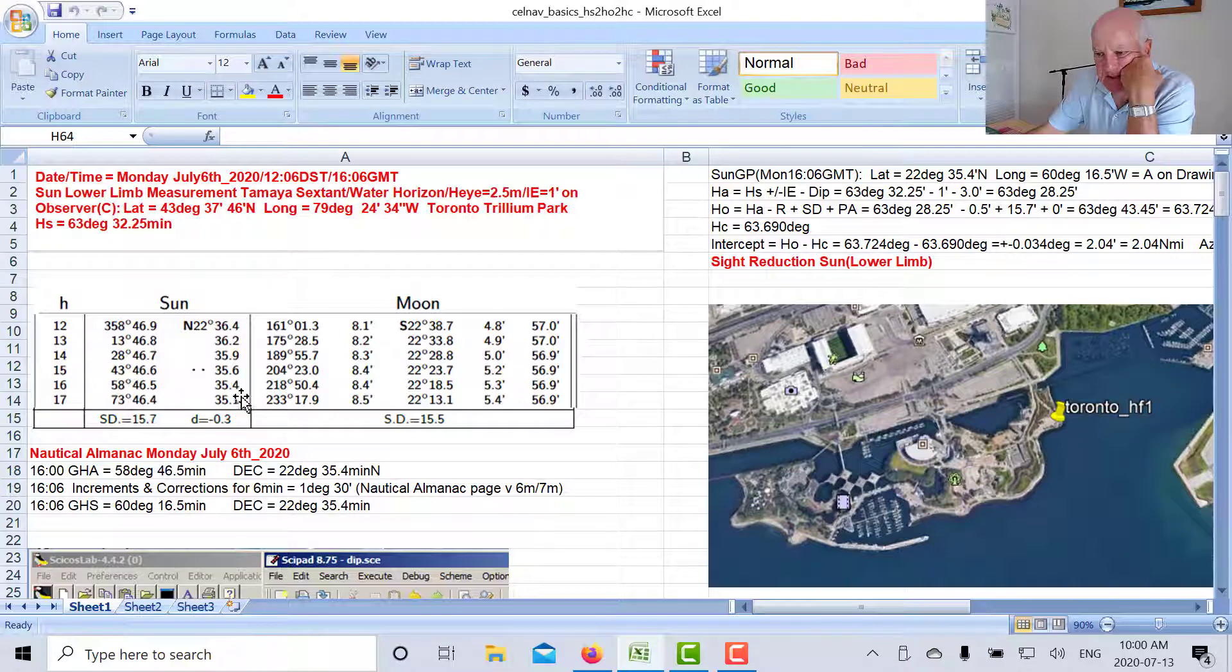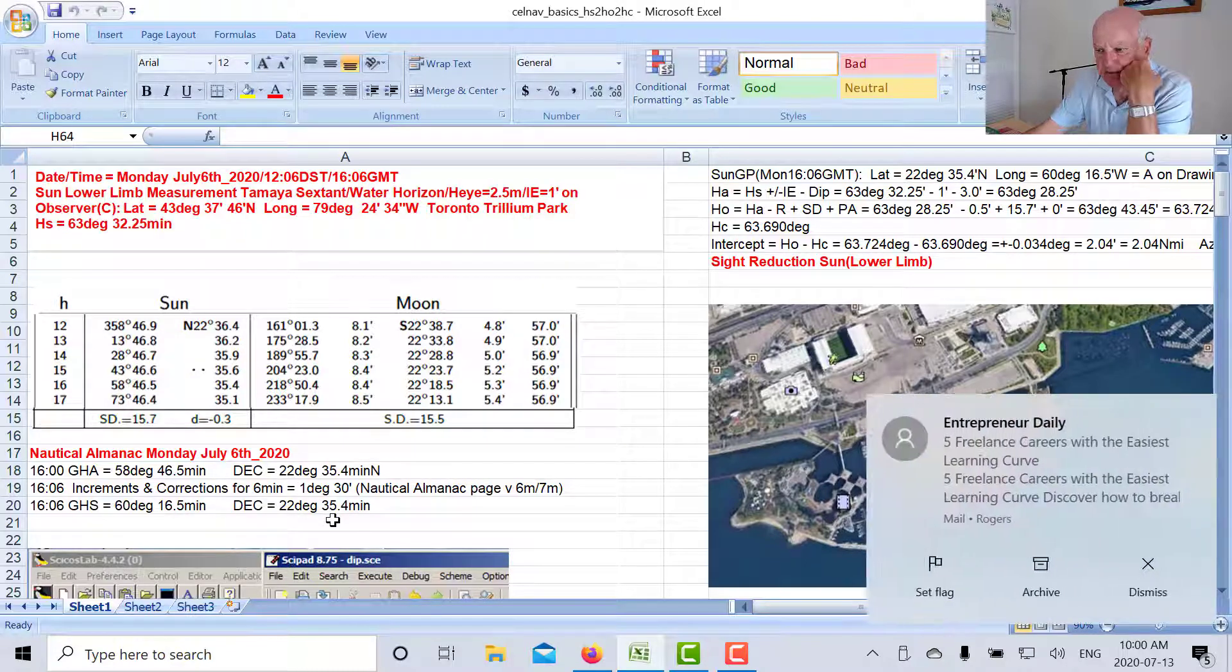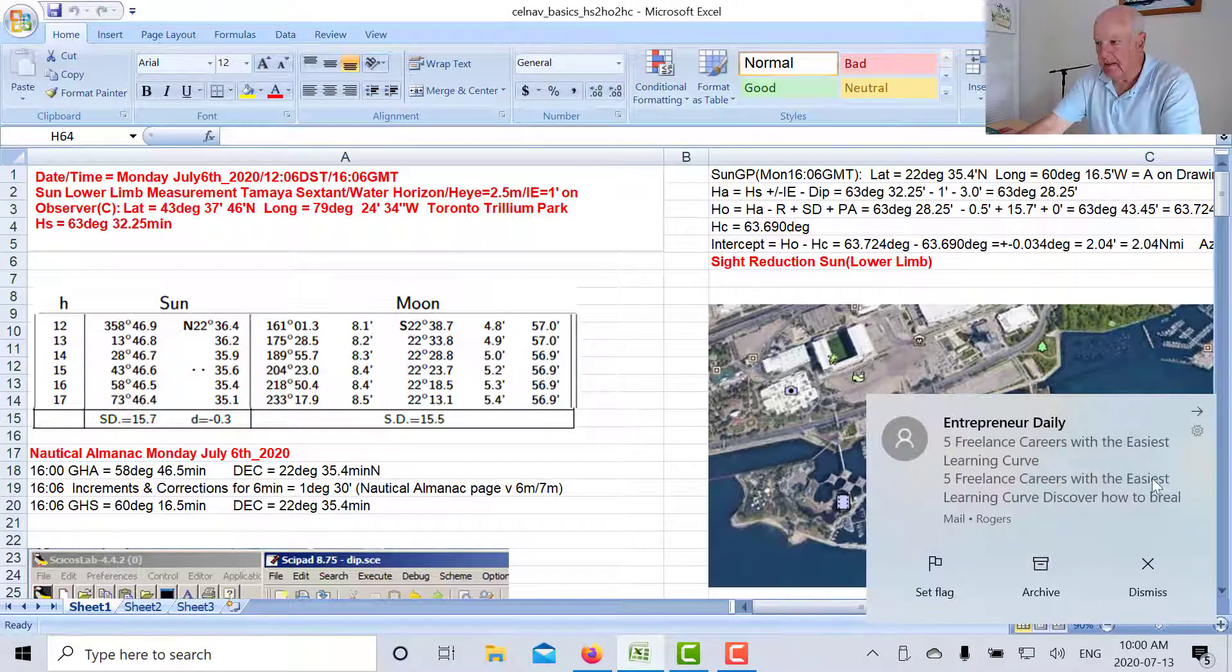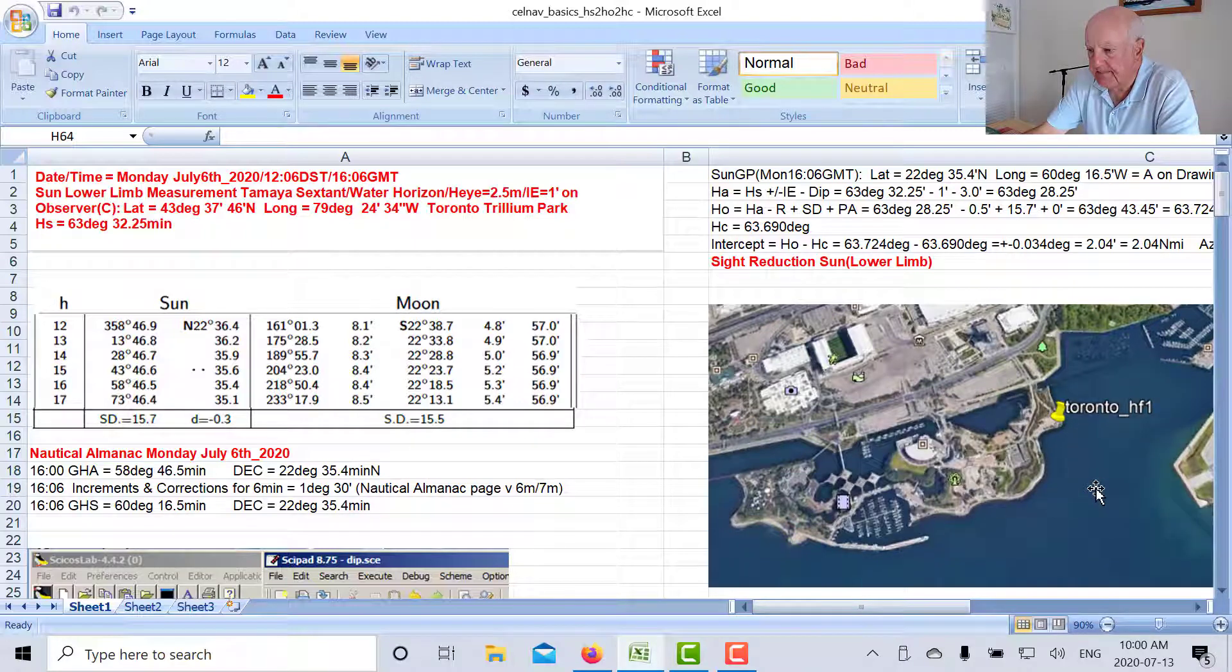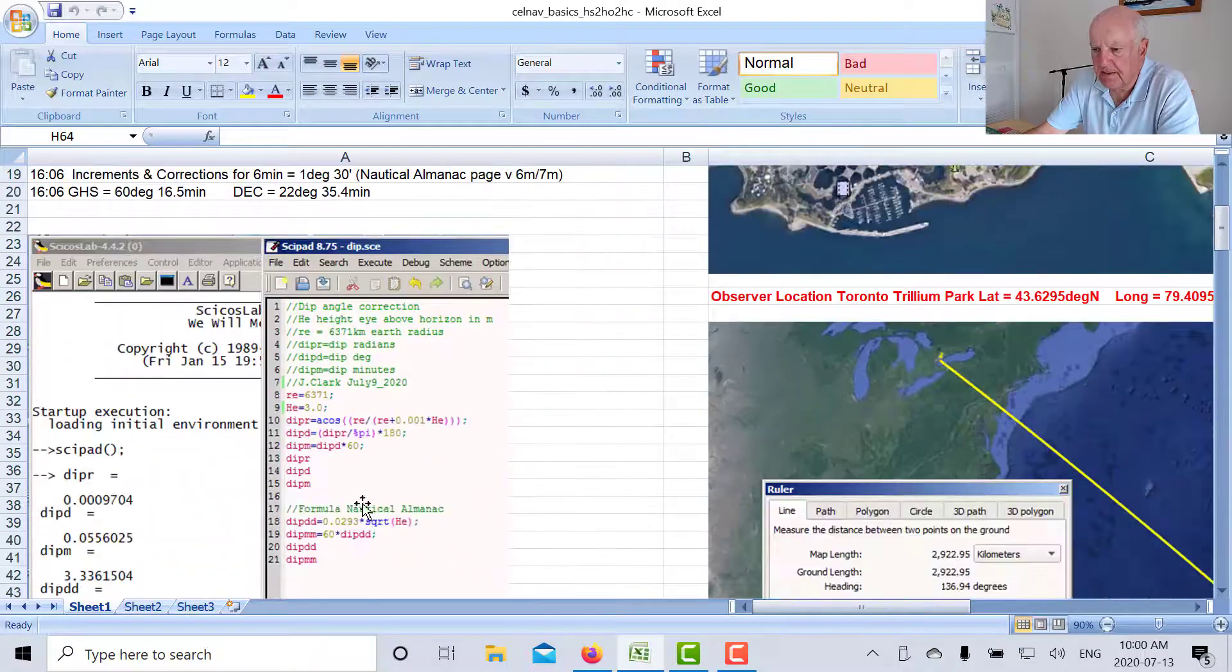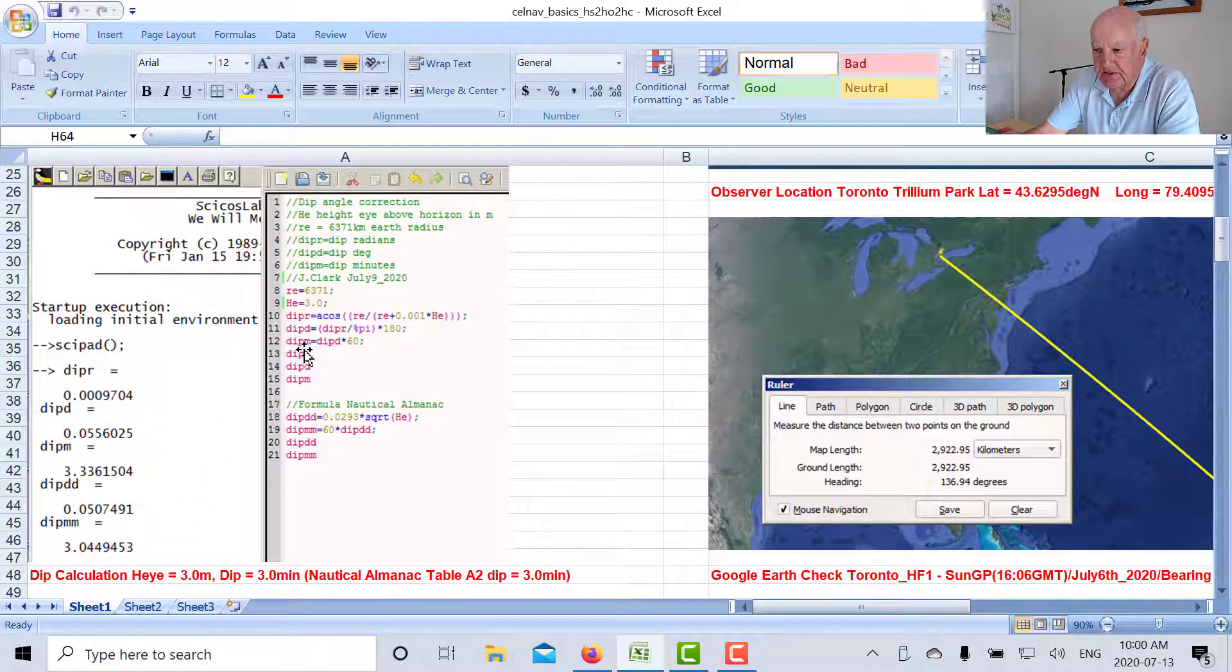And as far as the declination goes, notice that between 1600 and 1700 is only 0.3 of a minute difference, and we've got six minutes. So six minutes divided by 60 is a tenth of that, so really it's not much change. So we'll leave it at 35.4. So that's how we locate the GP down here.